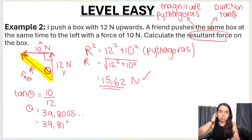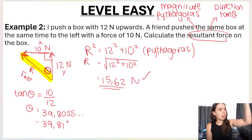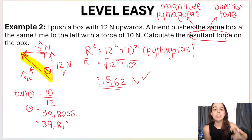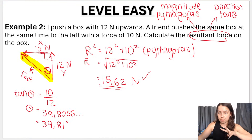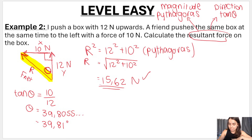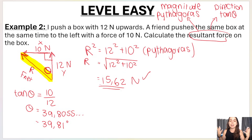Rounded to two decimal places: theta = 39.81°. But that's not your final answer — 39.81° alone doesn't mean anything without specifying which way from where. You have to give the exact direction. There are two ways: relative to the positive x-axis, or according to compass points.